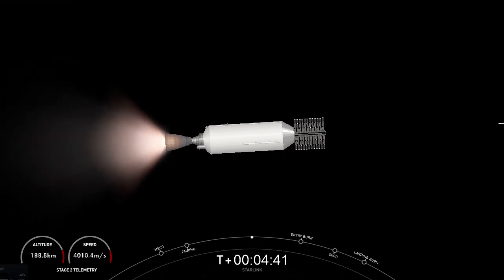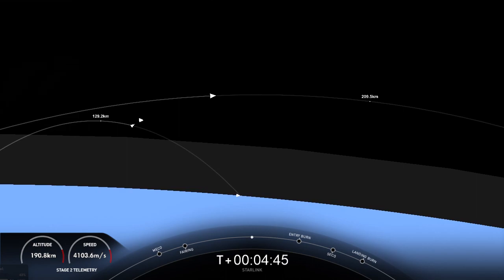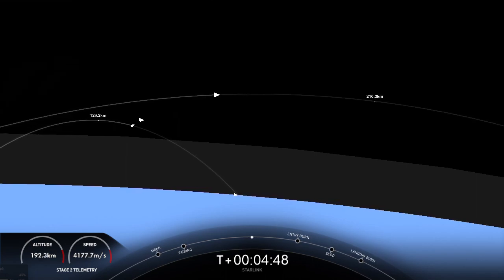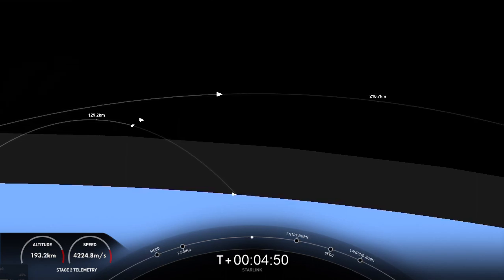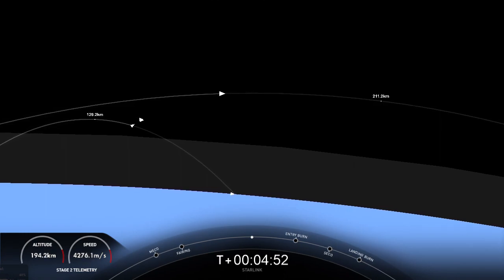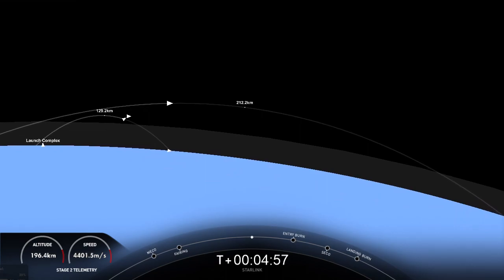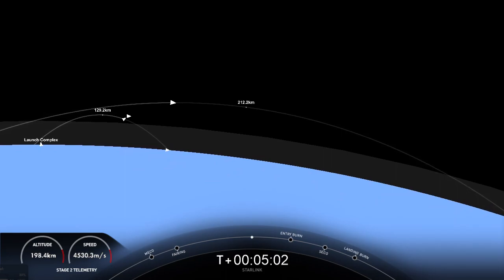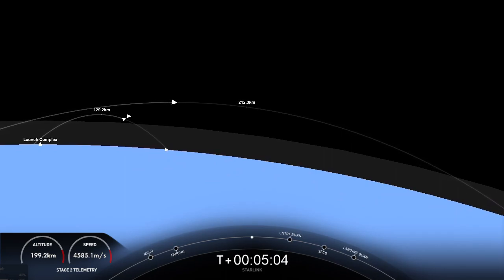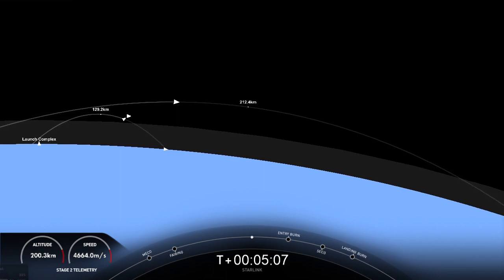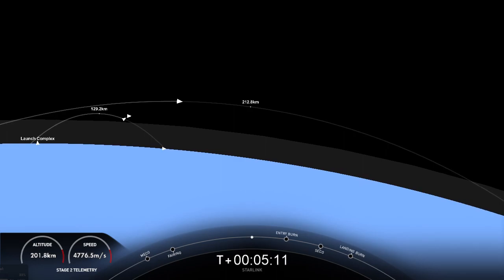Both vehicles are following nominal trajectories. As a reminder, Starlink is a satellite internet constellation designed and manufactured by SpaceX to provide high-speed, low-latency internet to people living in rural and remote locations around the globe.